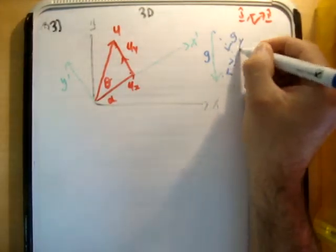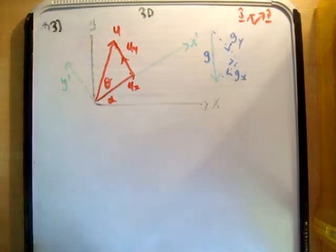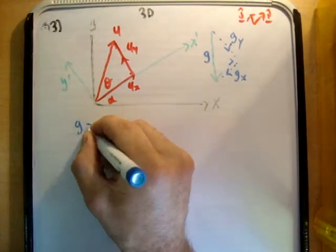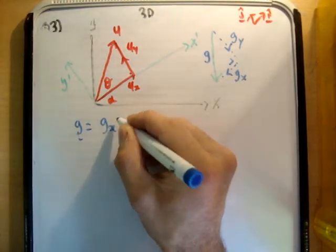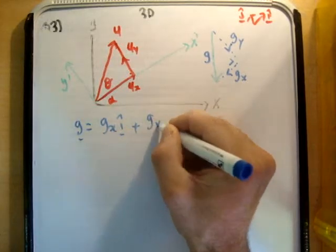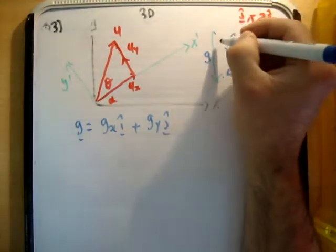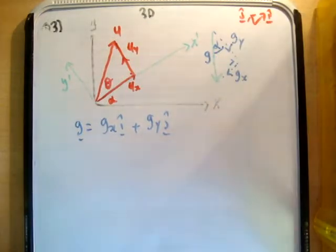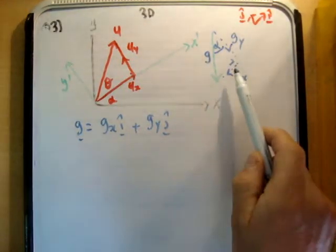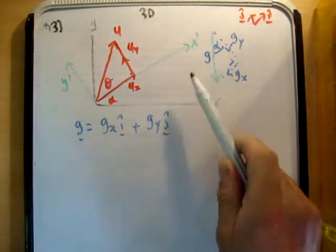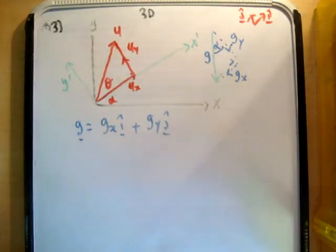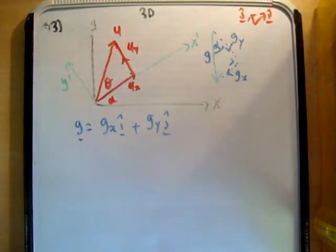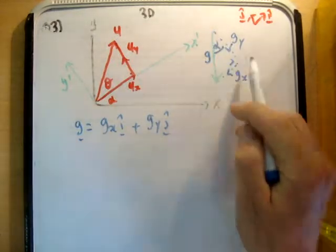So this is g_y. This is the vector g_x. So g is equal to g_x i hat plus g_y j hat. This angle here is also alpha. I've spoken about that before. It's basically because the vector g_y intersects with the x' axis at 90 degrees. And that makes these two angles the same.